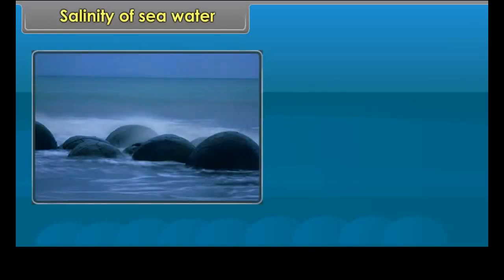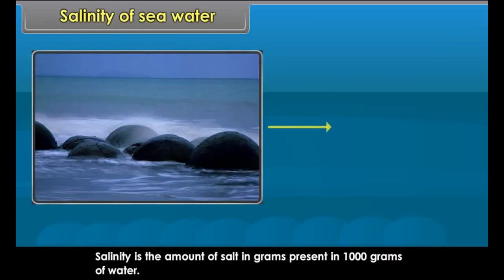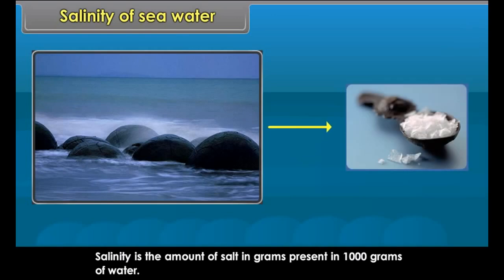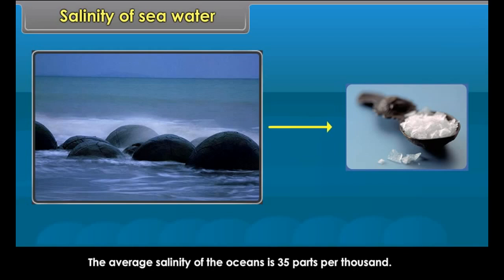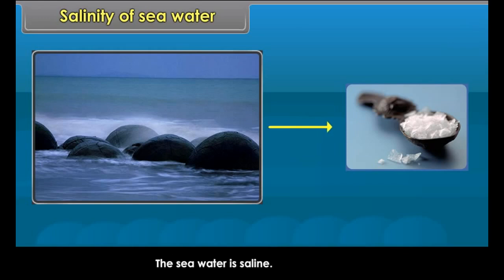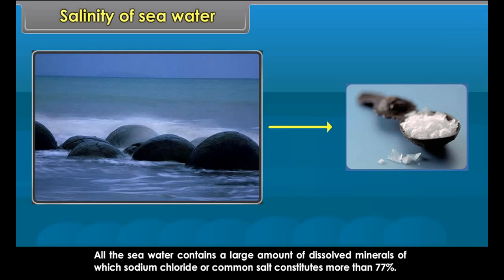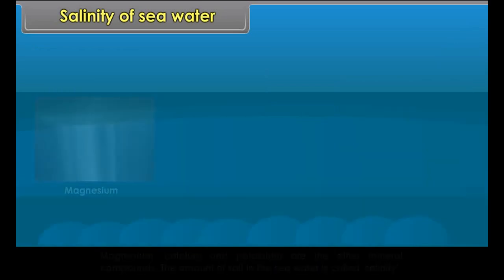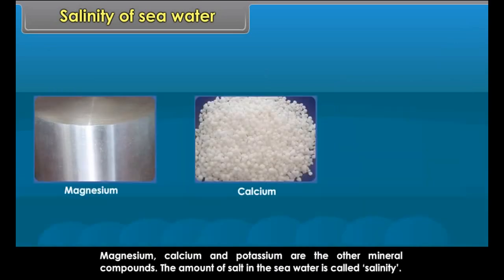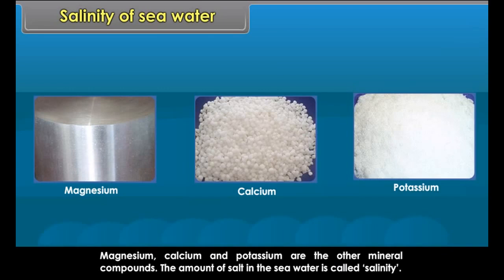Salinity is the amount of salt in grams present in 1000 grams of water. The average salinity of the oceans is 35 parts per thousand. The seawater is saline, and all seawater contains a large amount of dissolved minerals, of which sodium chloride or common salt constitutes more than 77%. Magnesium, calcium, and potassium are the other mineral compounds.